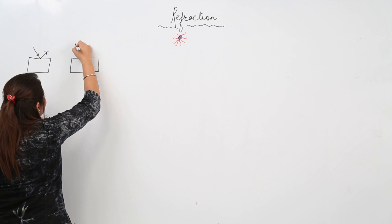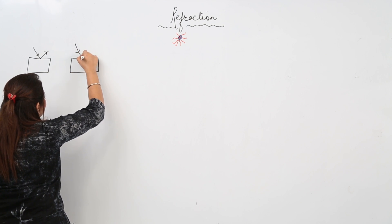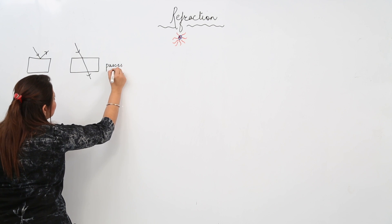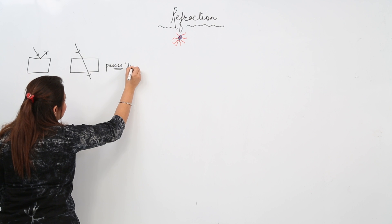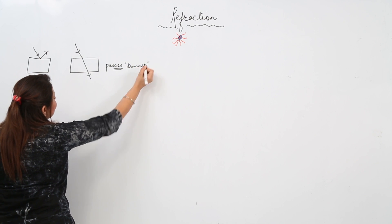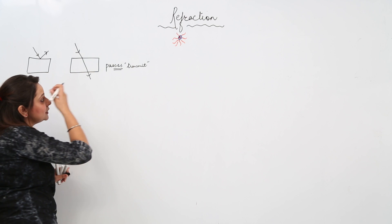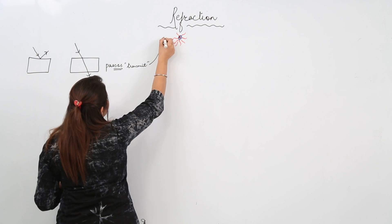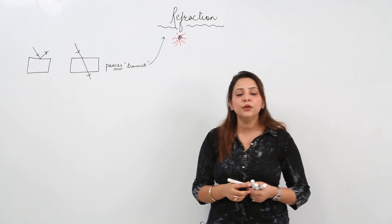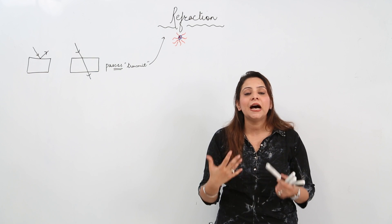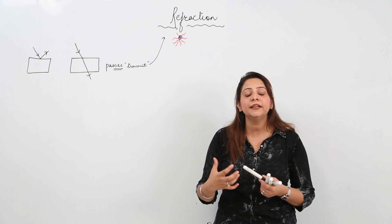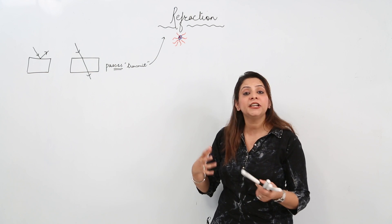Refraction means that when light strikes an object, it passes through the object. So whenever the transmission of light occurs, then this phenomenon of refraction comes into play. We are going to study how the transmission of light occurs and what specific terminology is used for it.